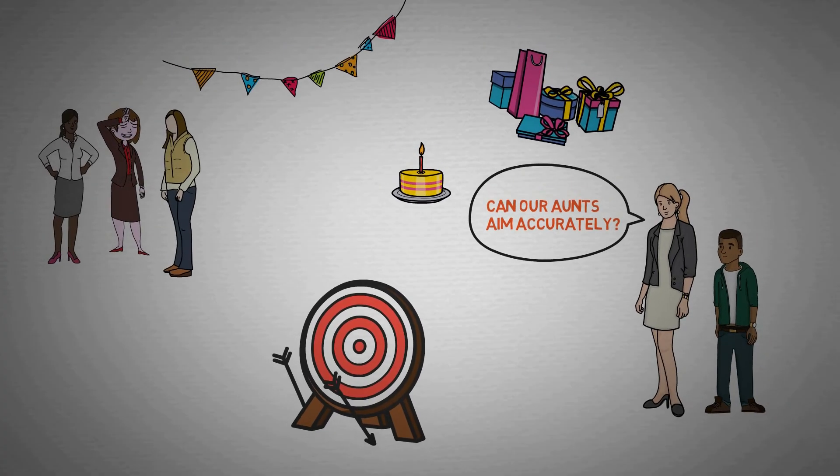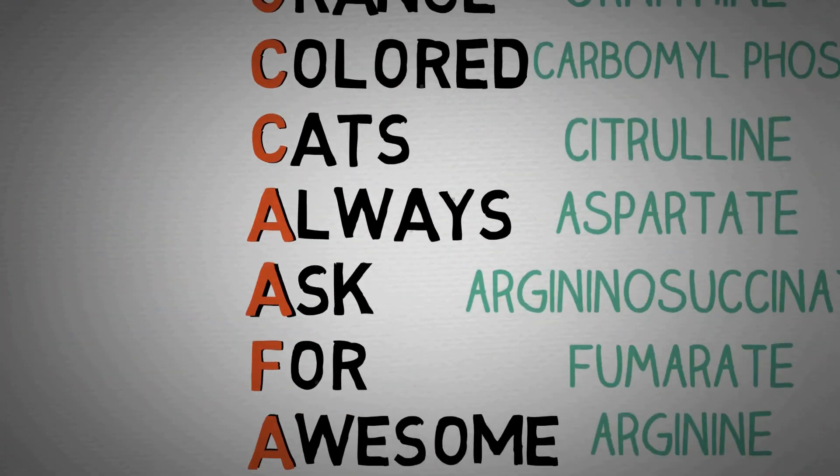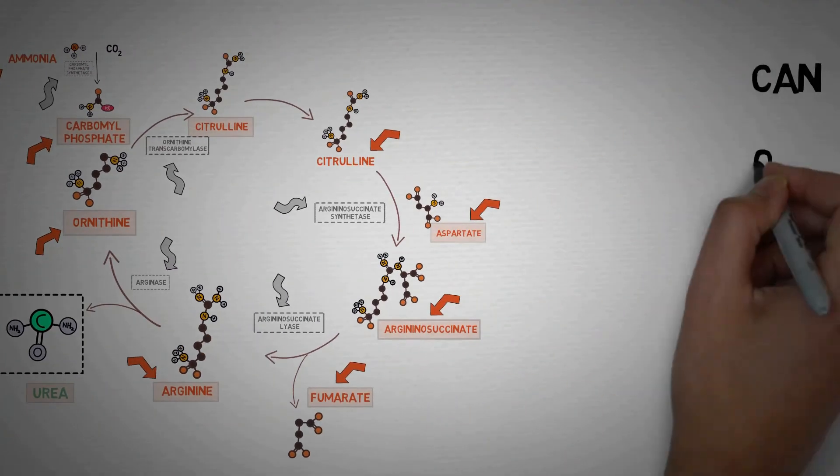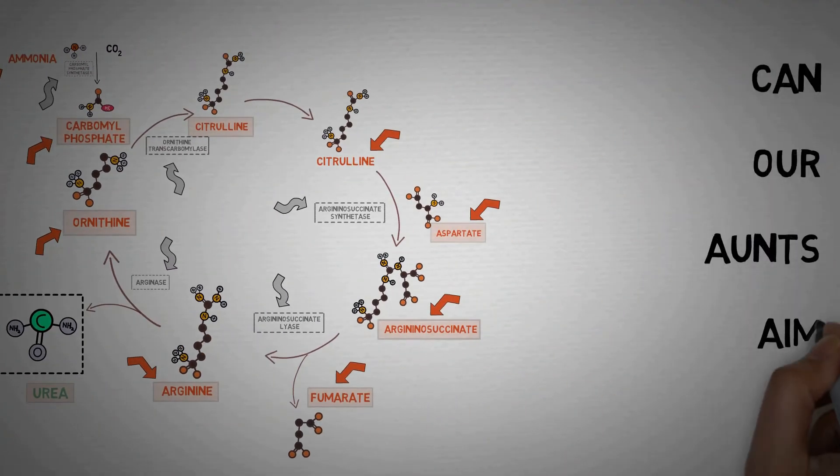This brings us to our second mnemonic of the urea cycle: Can our aunts aim accurately?